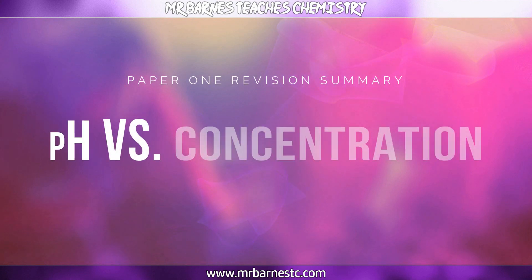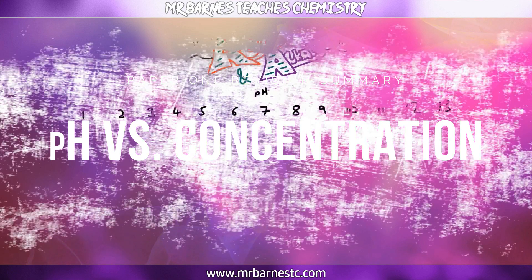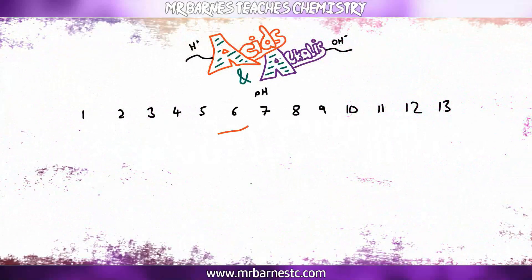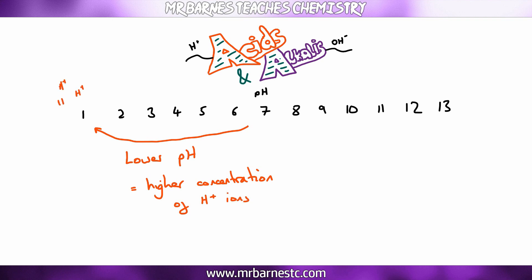The next part looks at the link between pH and concentration, particularly for H+ ions. As we go from pH 7 down to pH 1, the lower the pH, the higher the concentration of H+ ions. Something with pH 1 is going to have more H+ ions than something with a pH of 6.